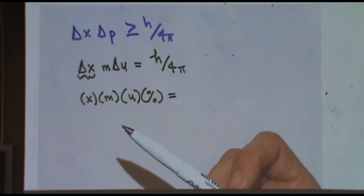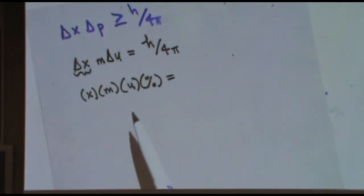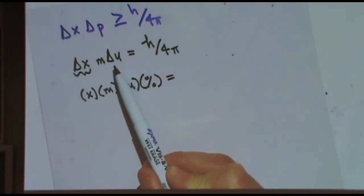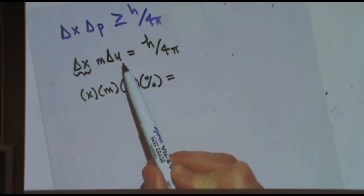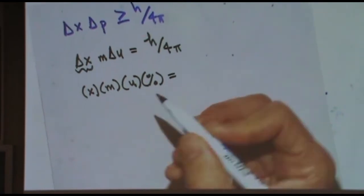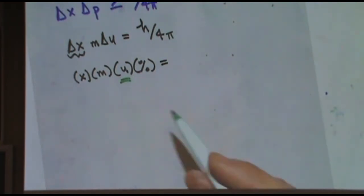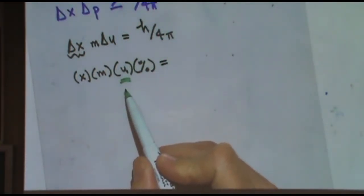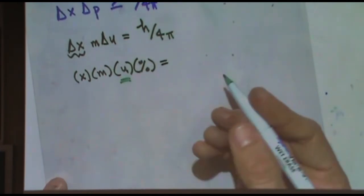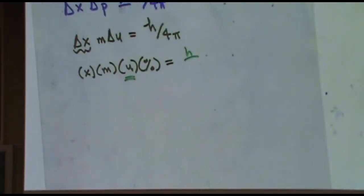Now delta doesn't mean change of, like you might be used to, like change in velocity. It means the uncertainty of the velocity. So if I'm having you calculate, say, the velocity, you're not finding the actual velocity. You're finding how uncertain you are about the actual velocity. Meaning, the larger the value you calculate, the more uncertain you are. The smaller the value you calculate, the more certain you are about the actual velocity. And this is going to be equal to h over four pi.